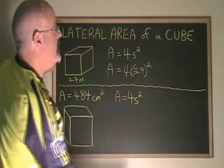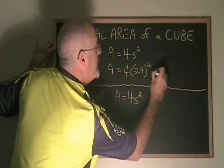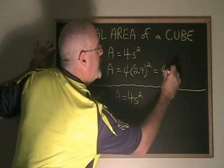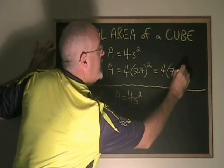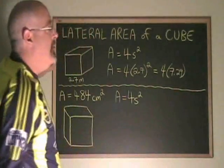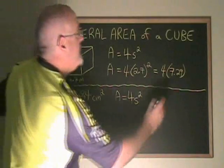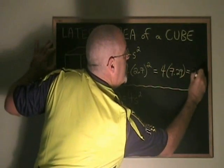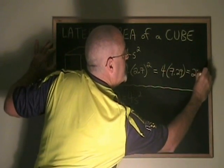2.7 squared is 7.29. So I have 4 times 7.29. And 4 times 7.29 is equal to 29.16.